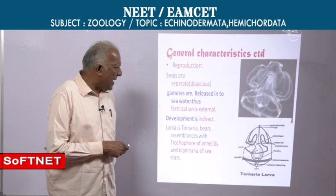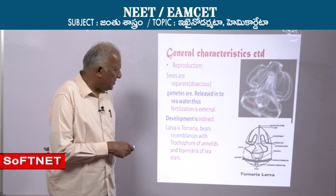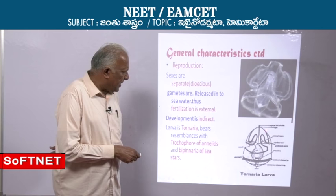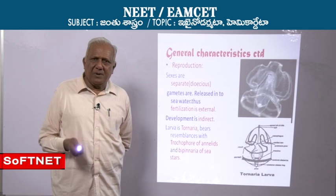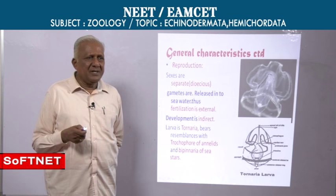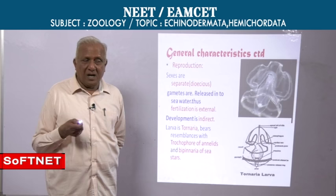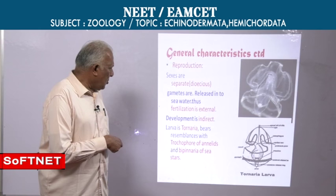The Tornaria larva is bell-shaped with pre-oral and post-oral ciliated bands and a curved alimentary canal. It bears resemblance to the bipinnaria and auricularia larvae of echinoderms, and at the same time resembles the trochophore larvae of polychaetes and mollusks. This is about the development of hemichordates.